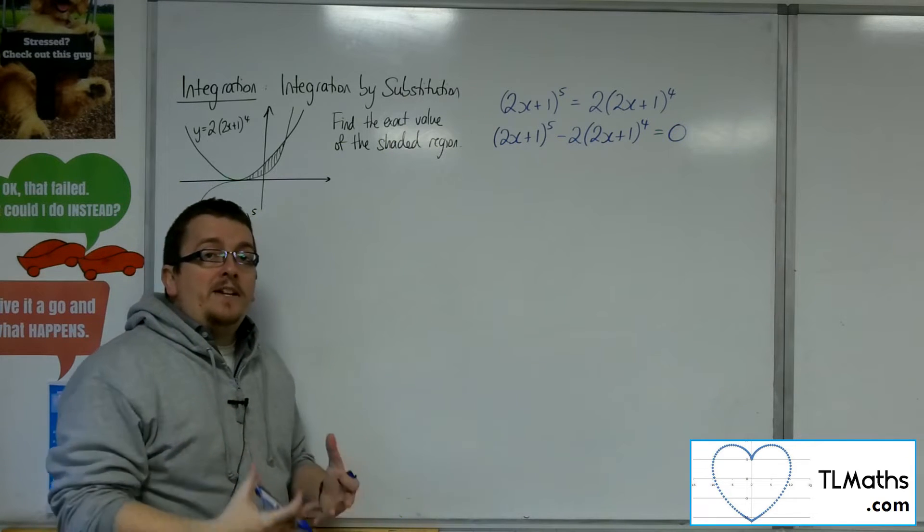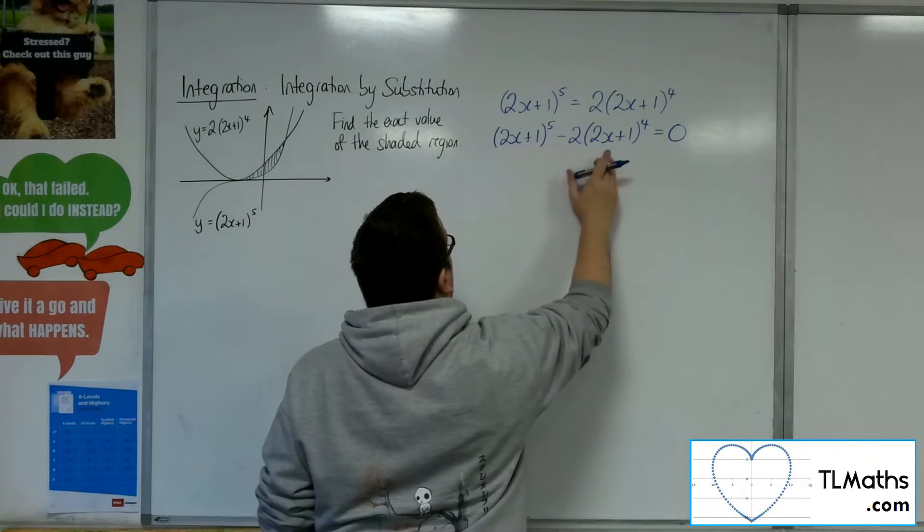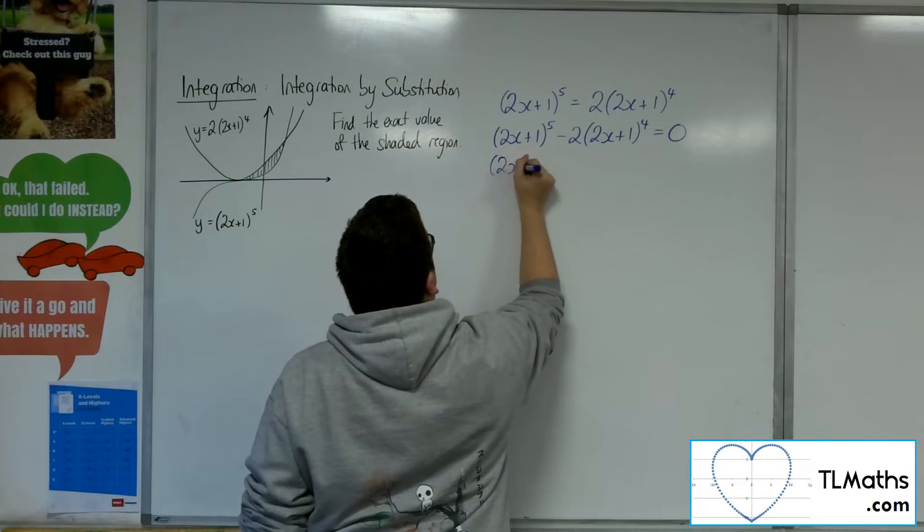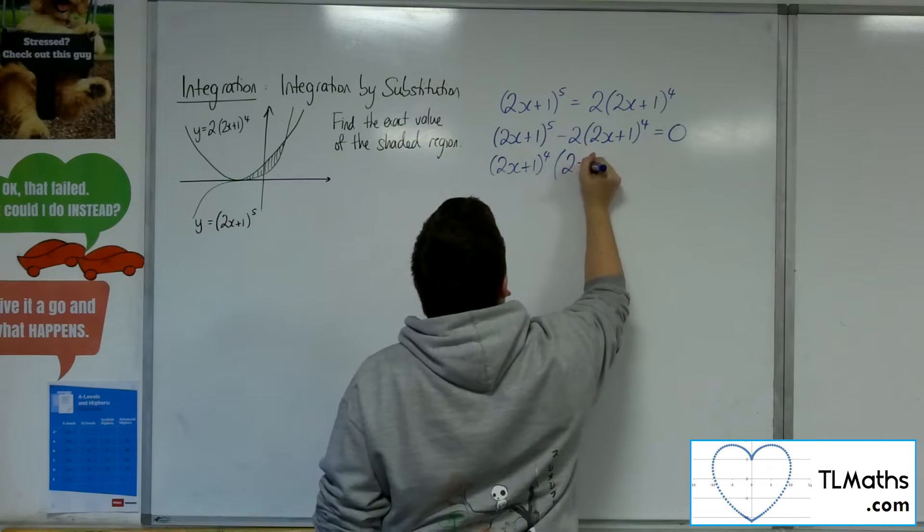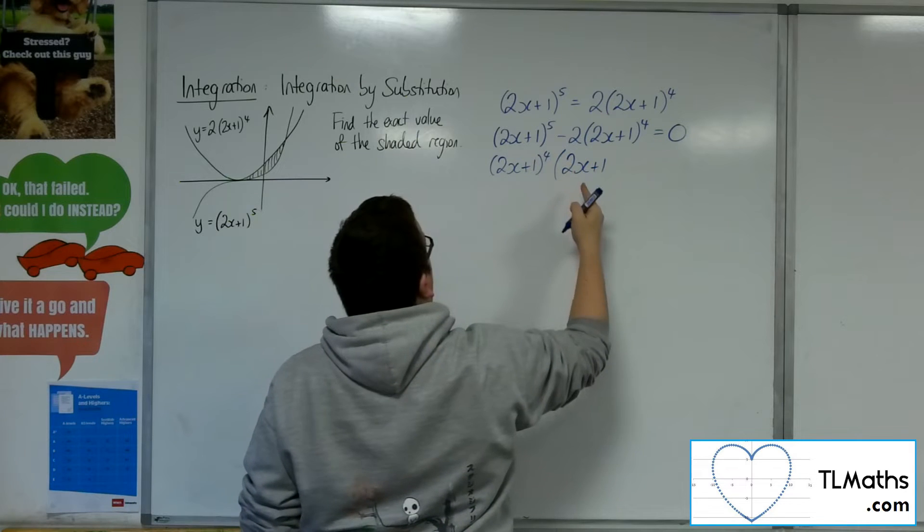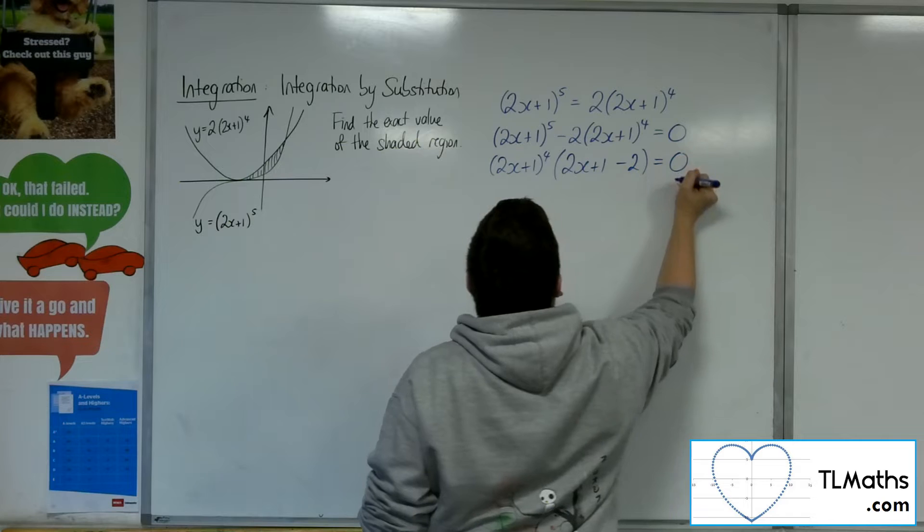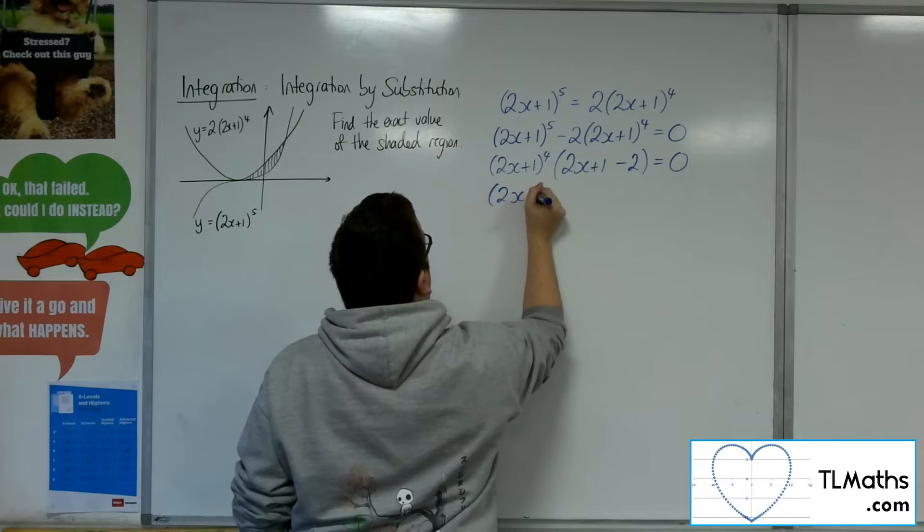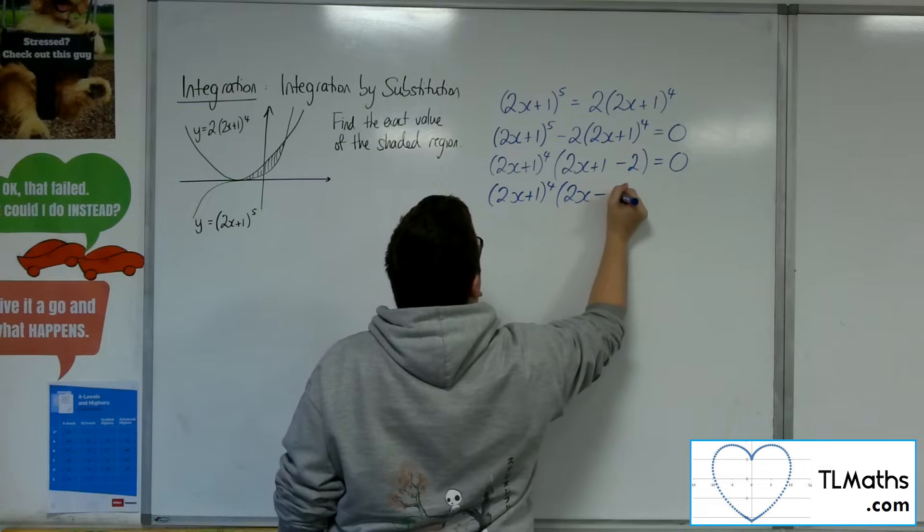I can now factor out 2x plus 1 to the 4 from both of these terms. So 2x plus 1 to the 4, and we'll be left with a 2x plus 1 from that bracket, and then take away 2 from that bracket. So we're going to have 2x plus 1 to the 4, times by 2x minus 1.